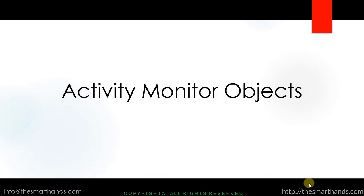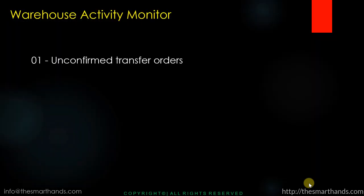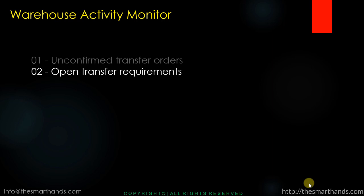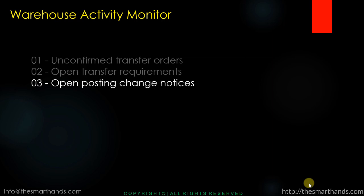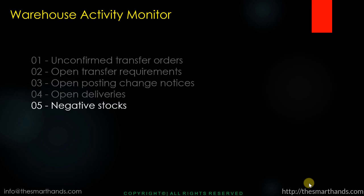Now let's discuss the Activity Monitor objects. You can run LL01 for seven different types of objects. The first is unconfirmed transfer orders — all pending TOs still waiting to be confirmed. The second is open transfer requirements — TRs created but still waiting to be converted to a transfer order. The third is open posting chain notices. The fourth is open deliveries still waiting to be processed.